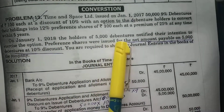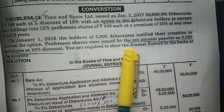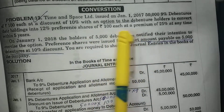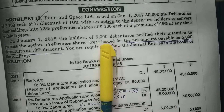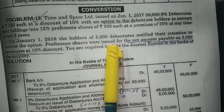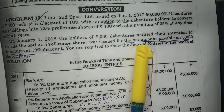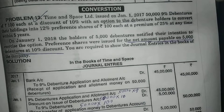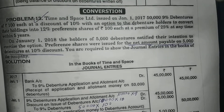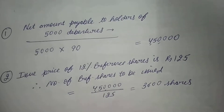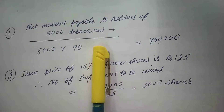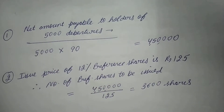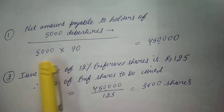On 1st January 2018, the holders of 5,000 debentures notified their intention to exercise the option. Preference shares were issued for the net amount payable on 5,000 debentures at 10% discount, which means these have to be redeemed at a discount. First, the question arises: how many shares should we issue? Net amount payable to the holders of 5,000 debentures — 5,000 into 90 because 90 rupees has to be paid — which comes out to 4,50,000.